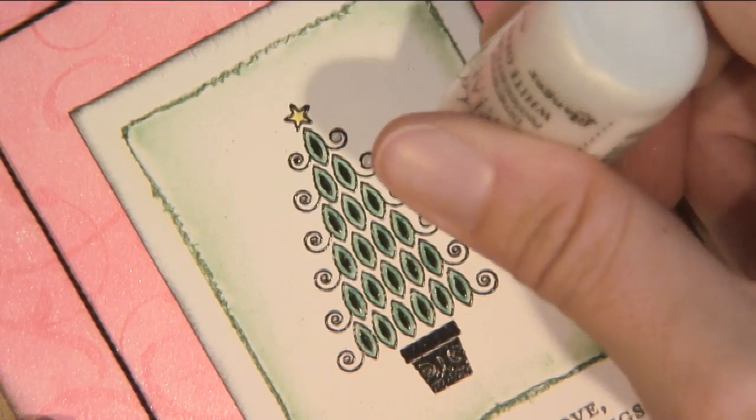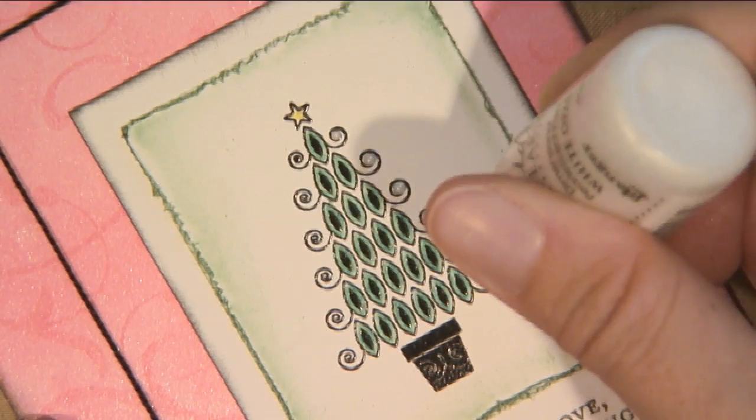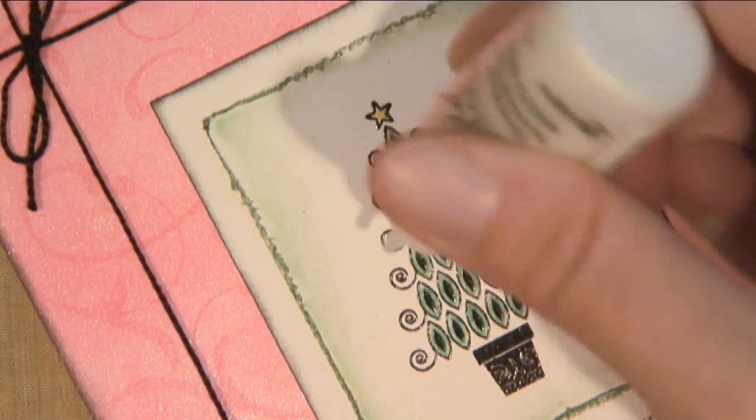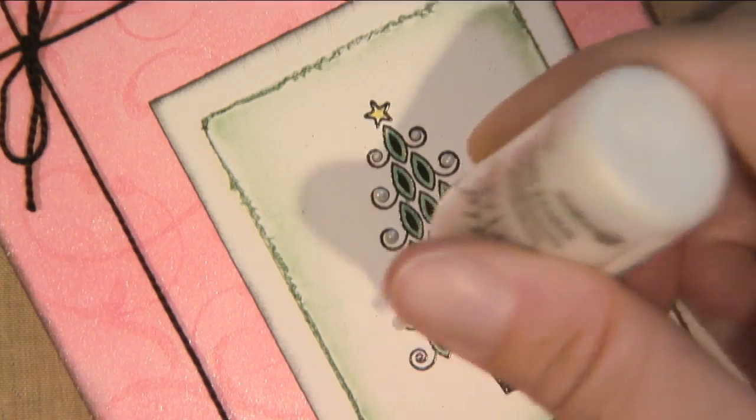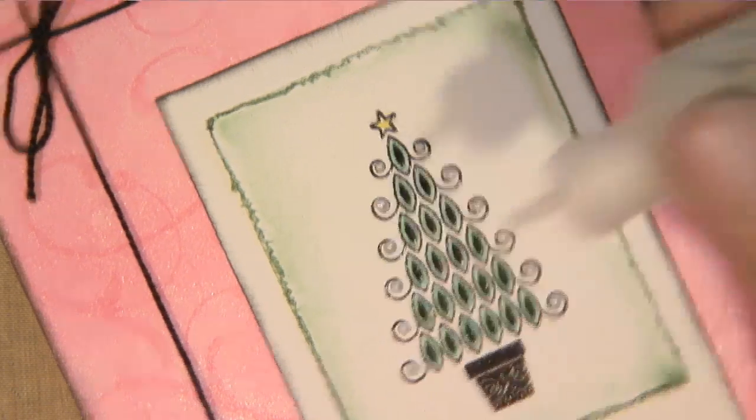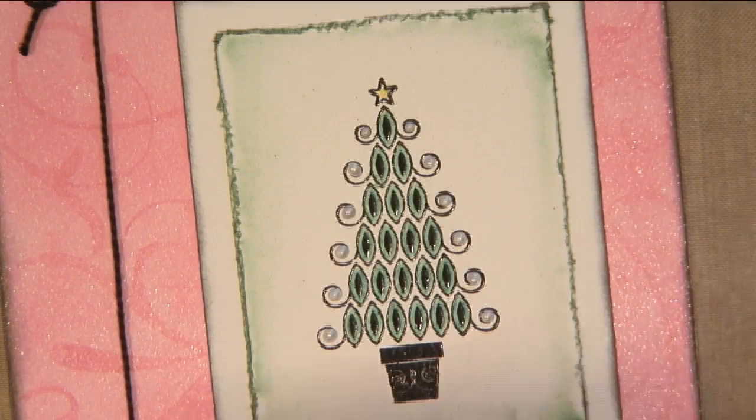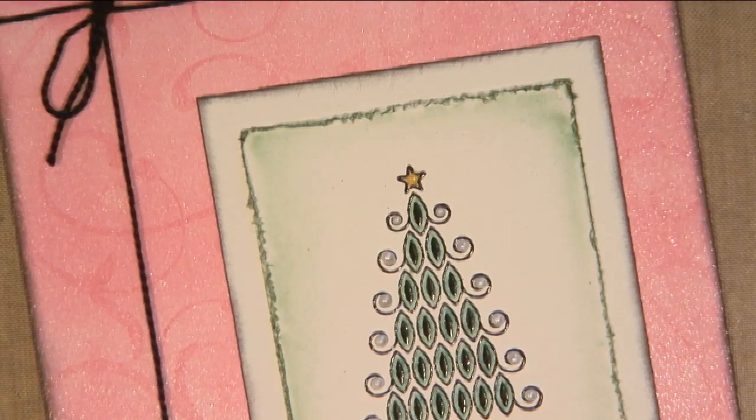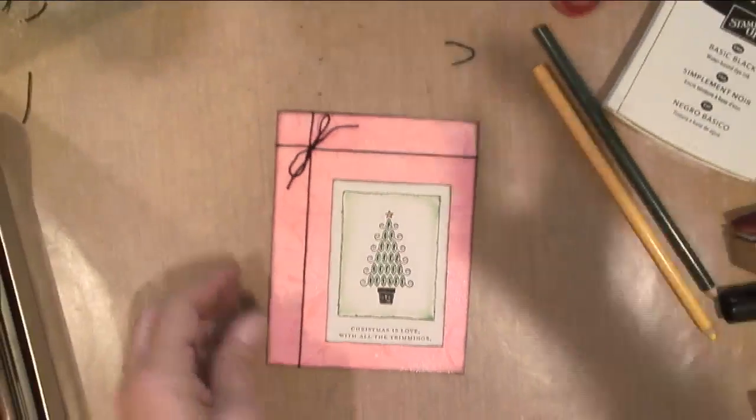This is Ranger Liquid Pearls and it goes on kind of like a brad, like a pearl gem. You don't have to spend a bunch of money on it. It's pretty economical. And when you apply this, you want to pull straight upward when you squeeze your bottle so you don't get it kind of drop off to the side. And that's just some yellow stickles for my stars to add a little bit of shine.